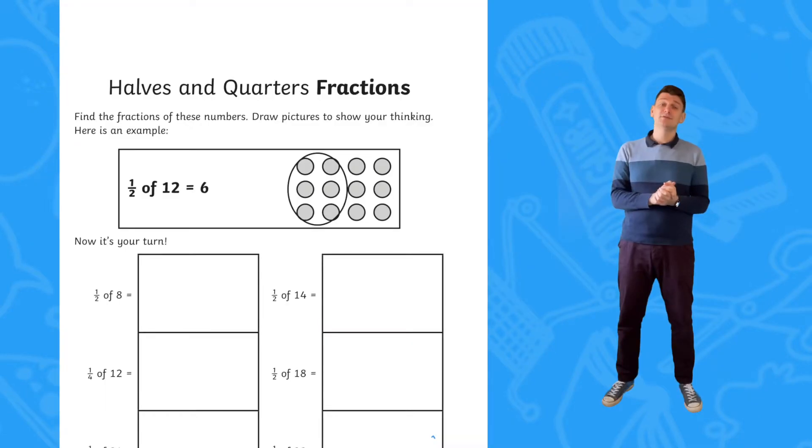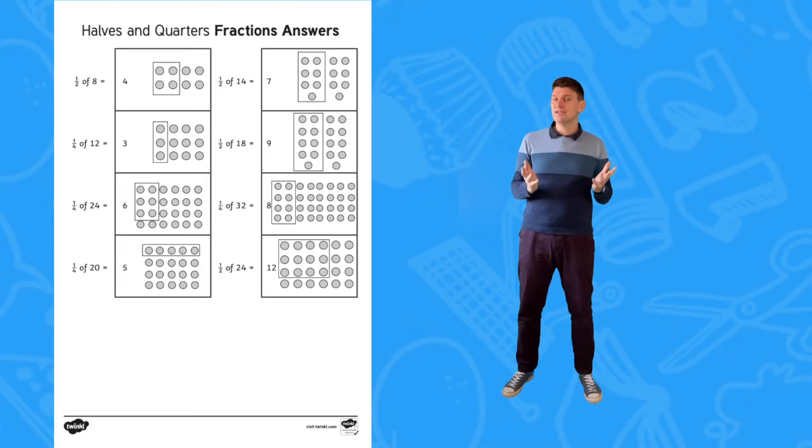Filling in the worksheet is straightforward. Children simply draw the number of dots and find half of it by sharing the number of dots into two equal groups or a quarter by sharing the number of dots into four equal groups.